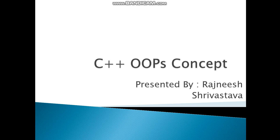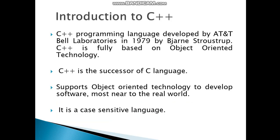C++ OOP concept. What is the meaning of OOP concept? OOP means Object Oriented Programming Language. First of all, we understand the introduction of C++. C++ programming language was developed by AT&T Bell Laboratories in 1979. C++ is fully based on Object Oriented Technology and C++ is the successor of C language. All the features that C has are also included in C++, and extra features are already added in C++. It is a case-sensitive language.